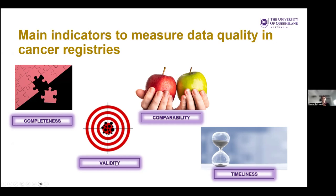The second indicator is validity or accuracy — the proportion of cases with a given characteristic, such as age or breed, that truly have that attribute, depending on data source quality and the skills of who is registering the cases. The third is comparability — the extent to which all procedures and definitions adhere to standard guidelines. The fourth is timeliness, though there is a trade-off between speed and accuracy, referring to the rate at which the registry can collect, process, and report reliable cancer data.